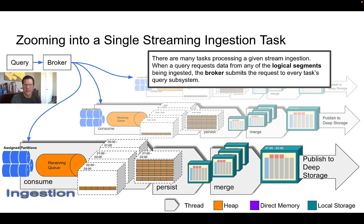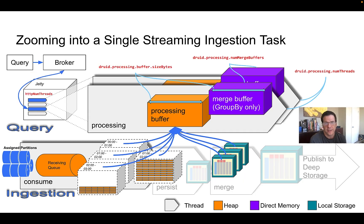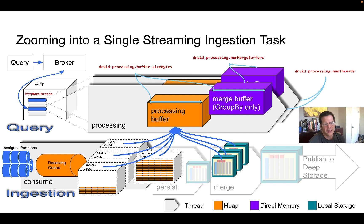Now let's step back out of a single task. When a query comes in to the broker and it requires any of the logical segments being ingested, it's going to talk to all the tasks that potentially have a portion of that data. The broker submits the subquery to all tasks ingesting data for that job. Within each task, the subquery arrives through the Jetty thread pool, controlled by the http.numThreads parameter, which sets the maximum number of requests a given task can process at a time.